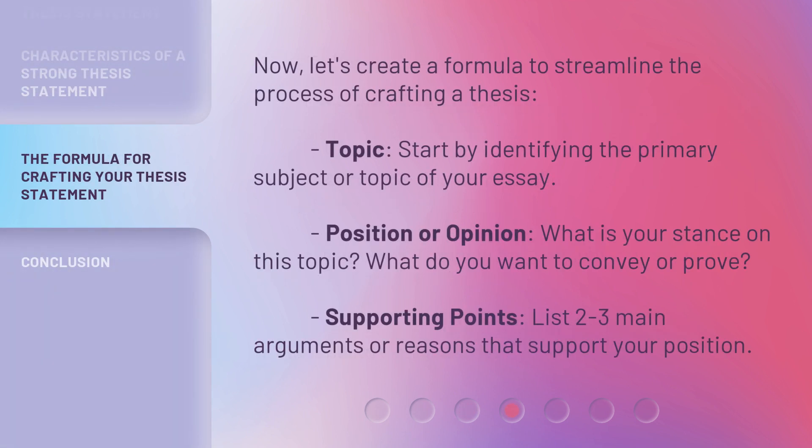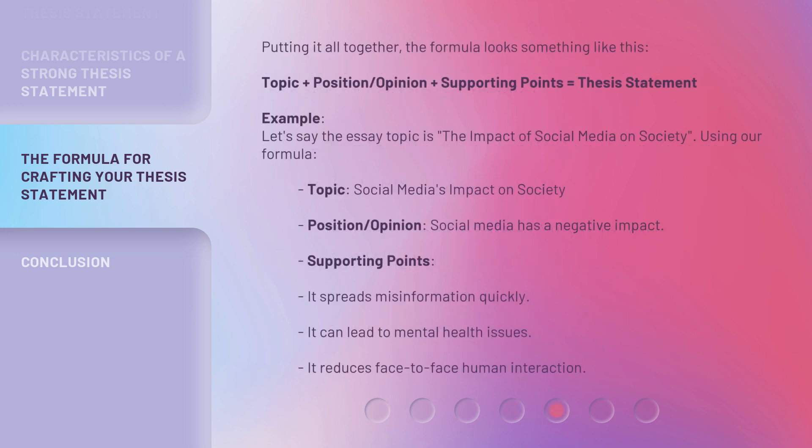Now, let's create a formula to streamline the process of crafting a thesis. Topic: start by identifying the primary subject or topic of your essay. Position or opinion: what is your stance on this topic? What do you want to convey or prove? Supporting points: list two to three main arguments or reasons that support your position. Putting it all together, the formula looks something like this: Topic + Position/Opinion + Supporting Points = Thesis Statement.